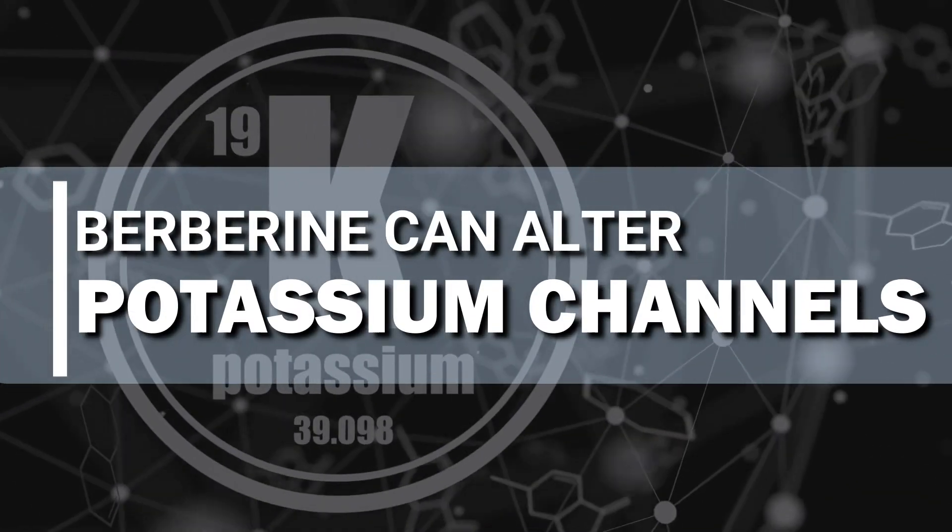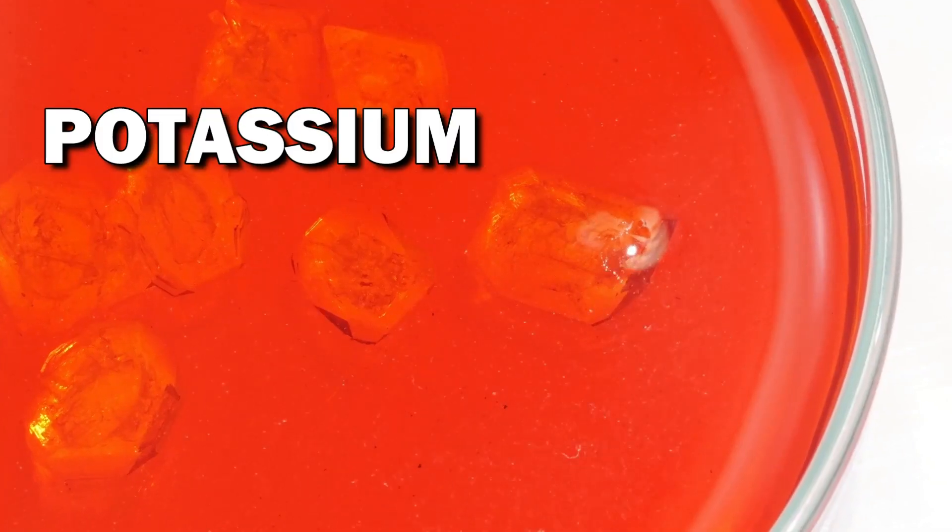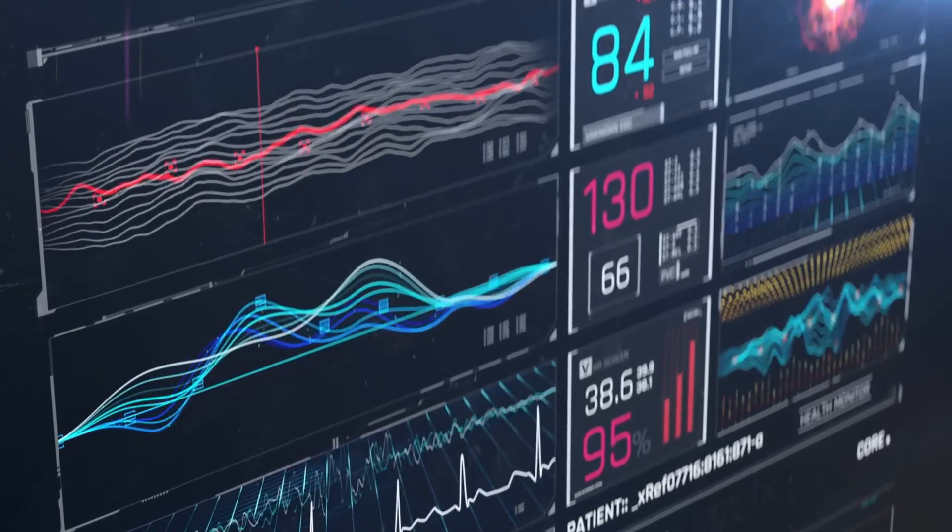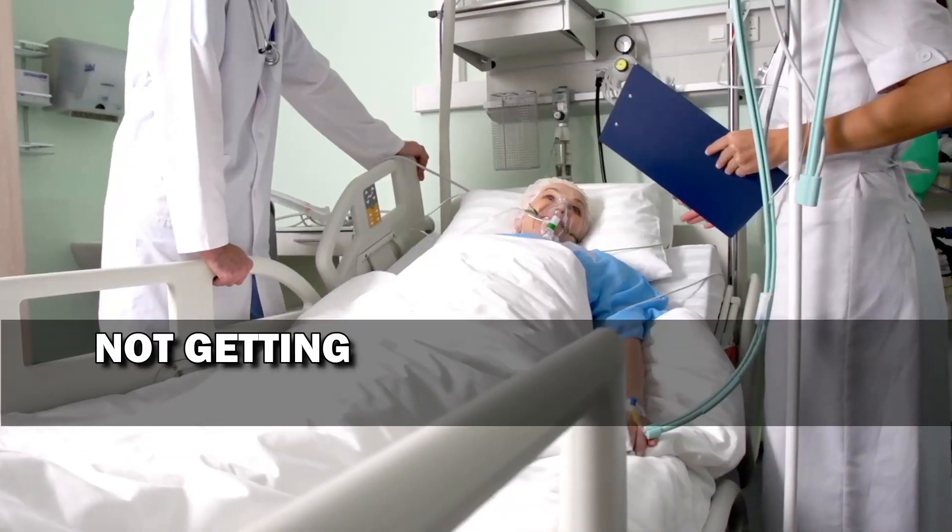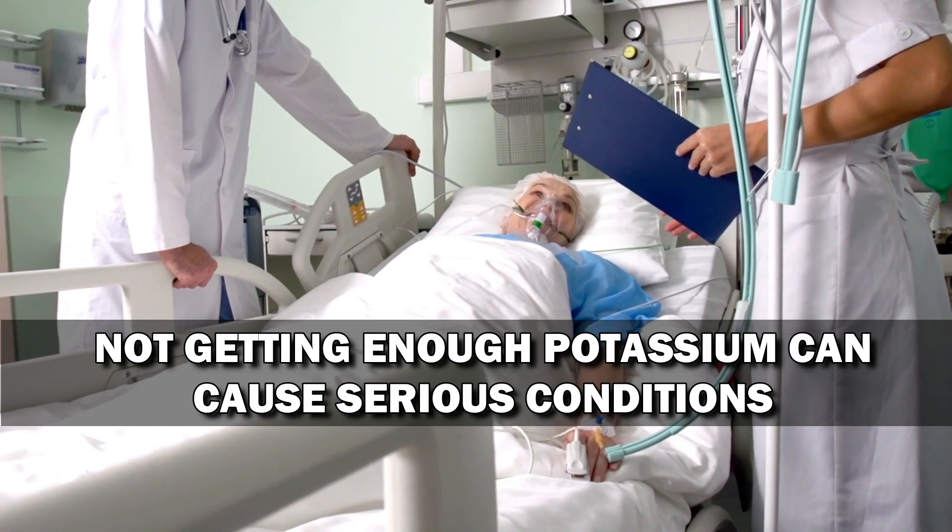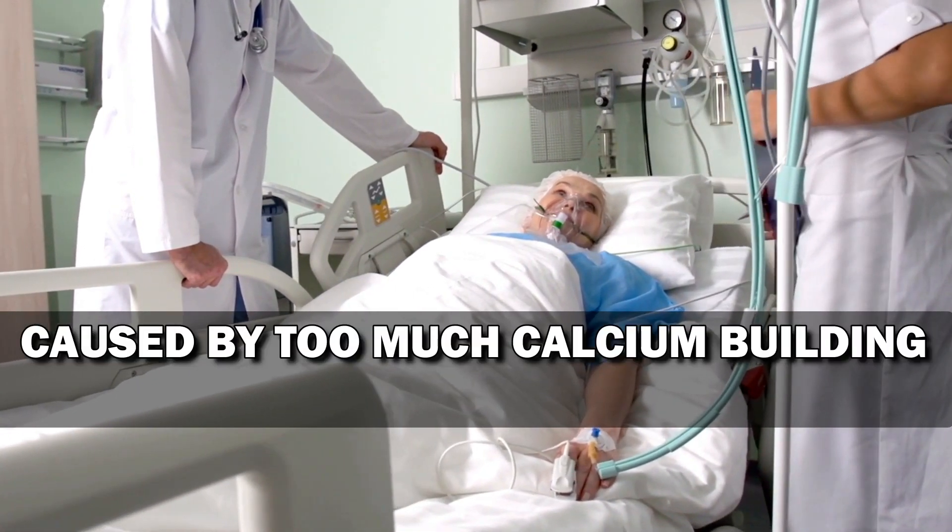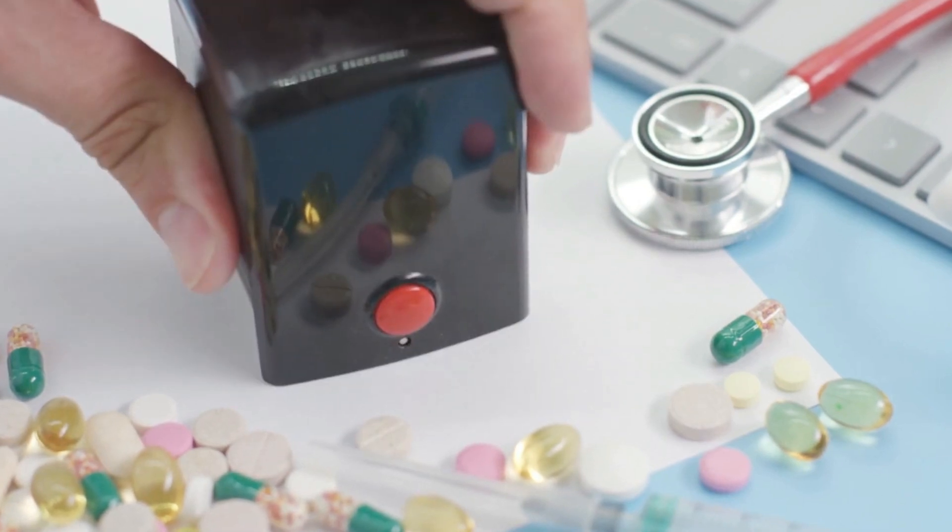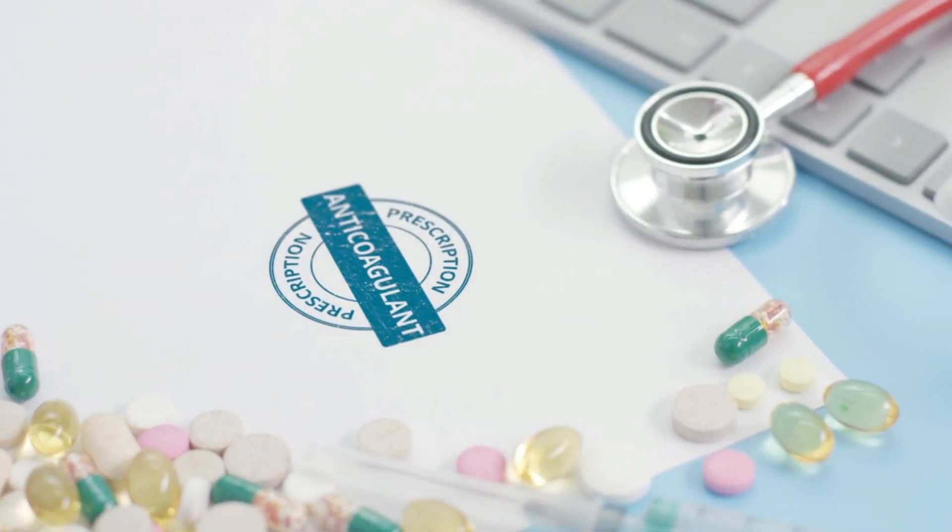Number three, berberine can alter potassium channels. Potassium is a mineral that prevents excessive amounts of calcium going into the cell. This explains why certain arrhythmias are actually caused by low potassium. Not getting enough potassium can cause serious conditions caused by too much calcium building up in the cells. Berberine can also help as an anticoagulant by helping the body to reduce blood clotting.